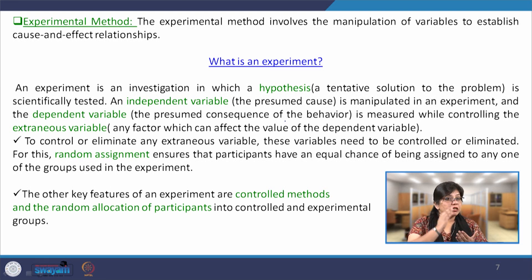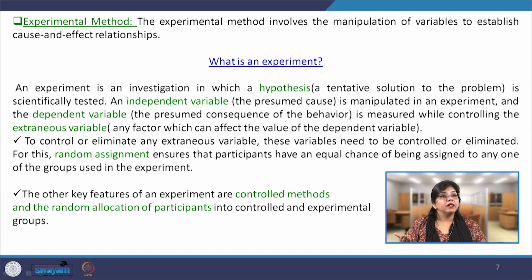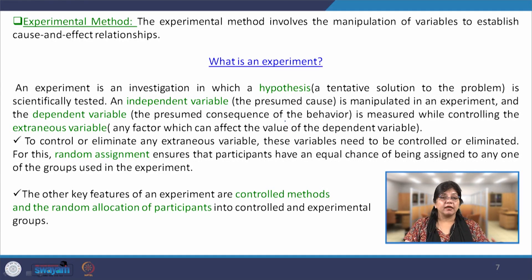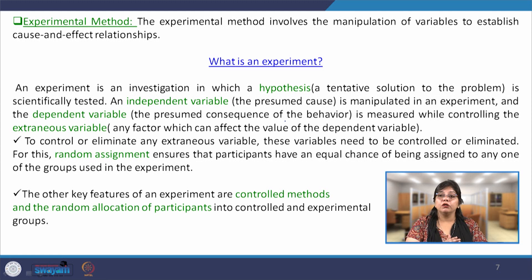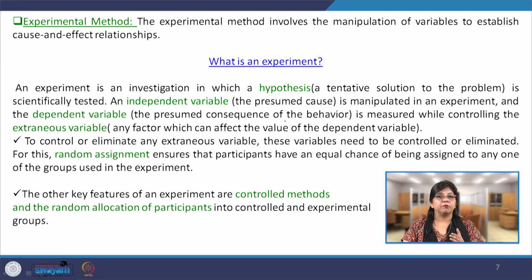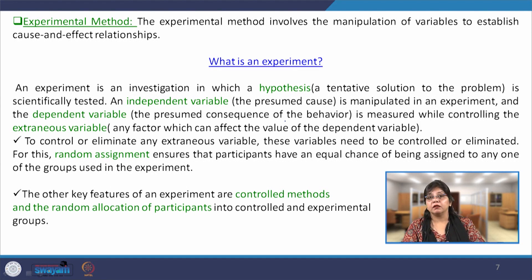When stress is being manipulated, academic performance varies accordingly. The dependent variable is the presumed consequence of behavior based on the independent variable, which is measured while controlling the extraneous variables — any variable apart from stress and academic performance that can affect the study. In order to establish a robust and scientific relationship between stress and academic performance, certain variables in the environment must be controlled. These variables, which affect the study, are termed extraneous variables and need to be controlled or eliminated.